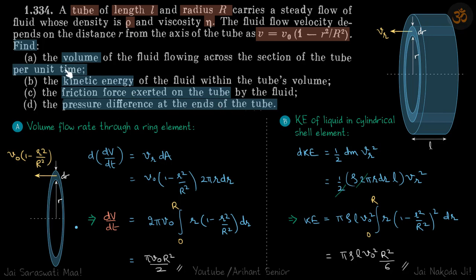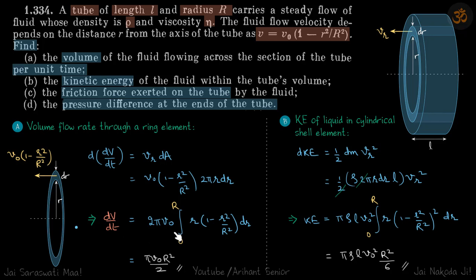Let us start with the volume flow rate. Since the velocity is increasing with changing radius, we'll take a ring so that the water flowing through this ring has constant velocity. We'll find the small volume flow rate through this ring and then integrate to find the total. The small volume flow rate dV/dt through the ring equals velocity times area, where the area of the ring is 2πr·dr. We integrate with limits of r from 0 to R to get the total volume flow rate.